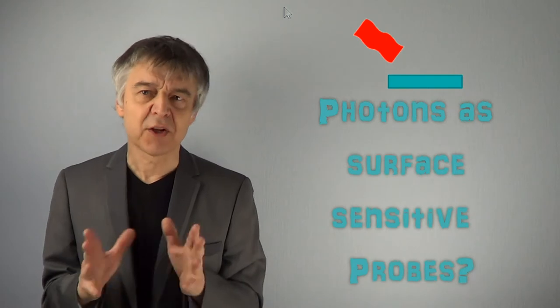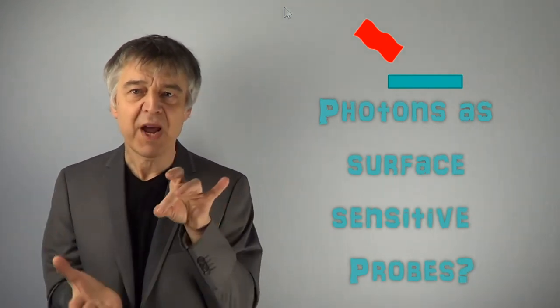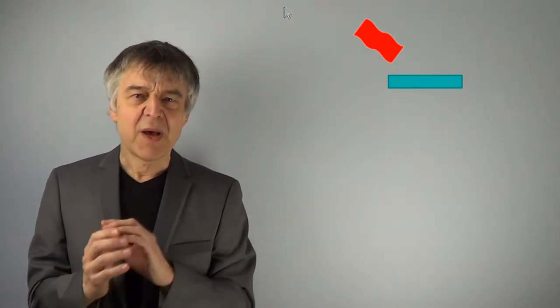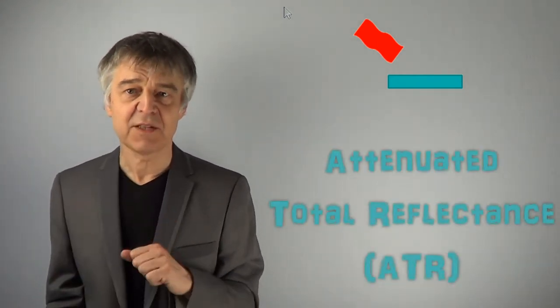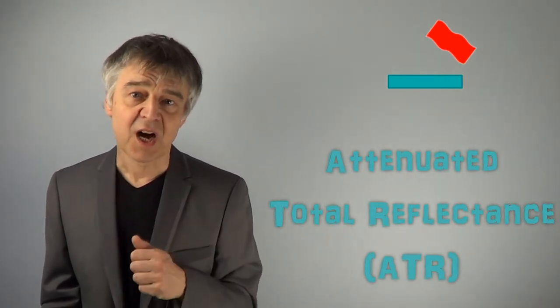Photons usually are not very surface-sensitive probes, because they penetrate generally very deeply into the sample. However, a measuring geometry was developed which allows photons only to penetrate a few atomic layers of the sample, the so-called ATR geometry.